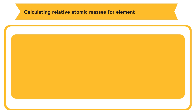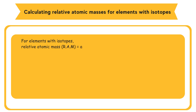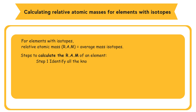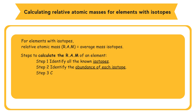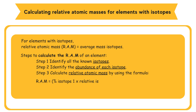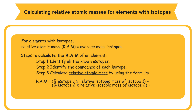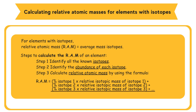For elements with isotopes, the relative atomic mass is the average mass of the isotopes. Steps to calculate: Step 1 — identify all known isotopes. Step 2 — identify the abundance of each isotope. Step 3 — calculate using the formula: Relative Atomic Mass = (% isotope 1 × relative isotopic mass 1 + % isotope 2 × relative isotopic mass 2 + % isotope 3 × relative isotopic mass 3) ÷ 100.